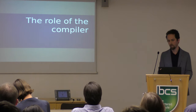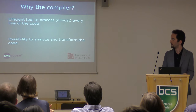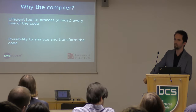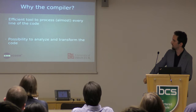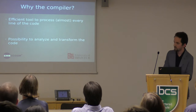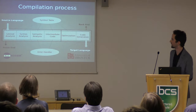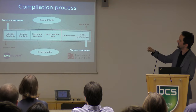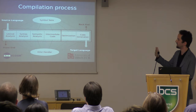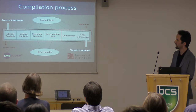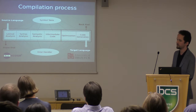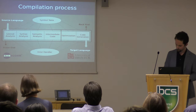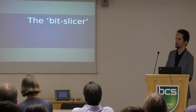Why are we working with the compiler? First of all, compilers are already well-tested and well-designed tools to analyze code, because they go through almost each line of the program and give us the possibility to analyze and transform the code — which is basically what we are trying to do with these tools. Looking at the compilation process, the source language goes through lexical analysis, syntax analysis, semantic analysis, and is then turned into an intermediate representation, to which backend optimizations are applied before generating code. That's the point at which I'm working — the optimization phase on the intermediate representation — and that's where my tool, the BitSlicer, acts.